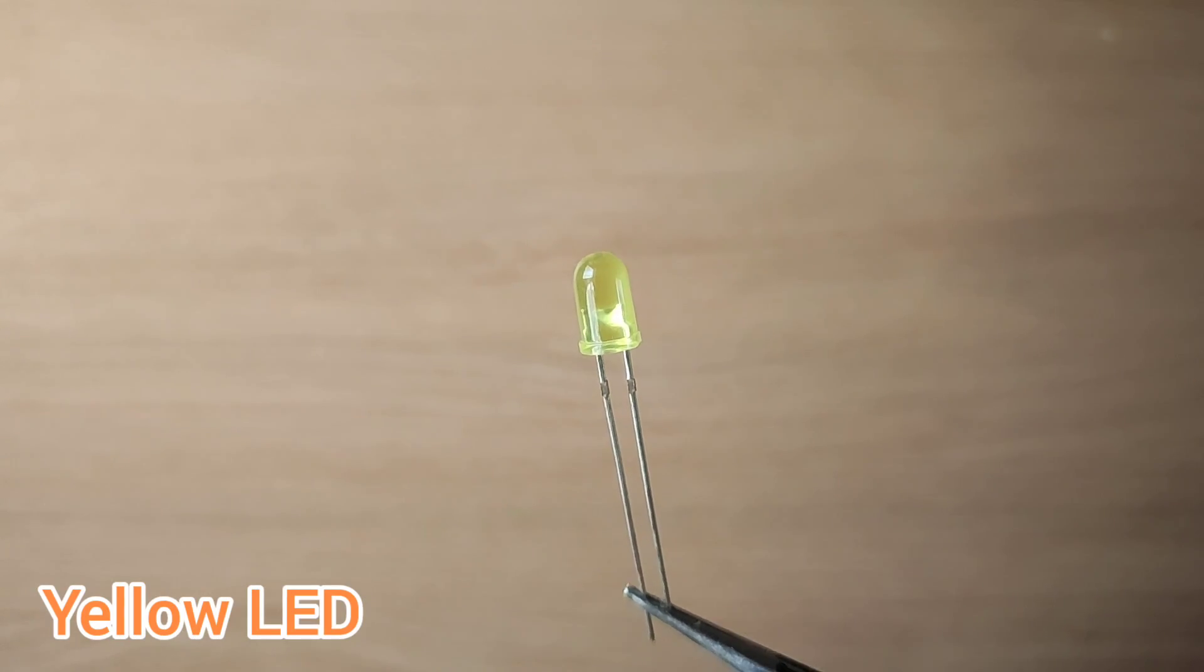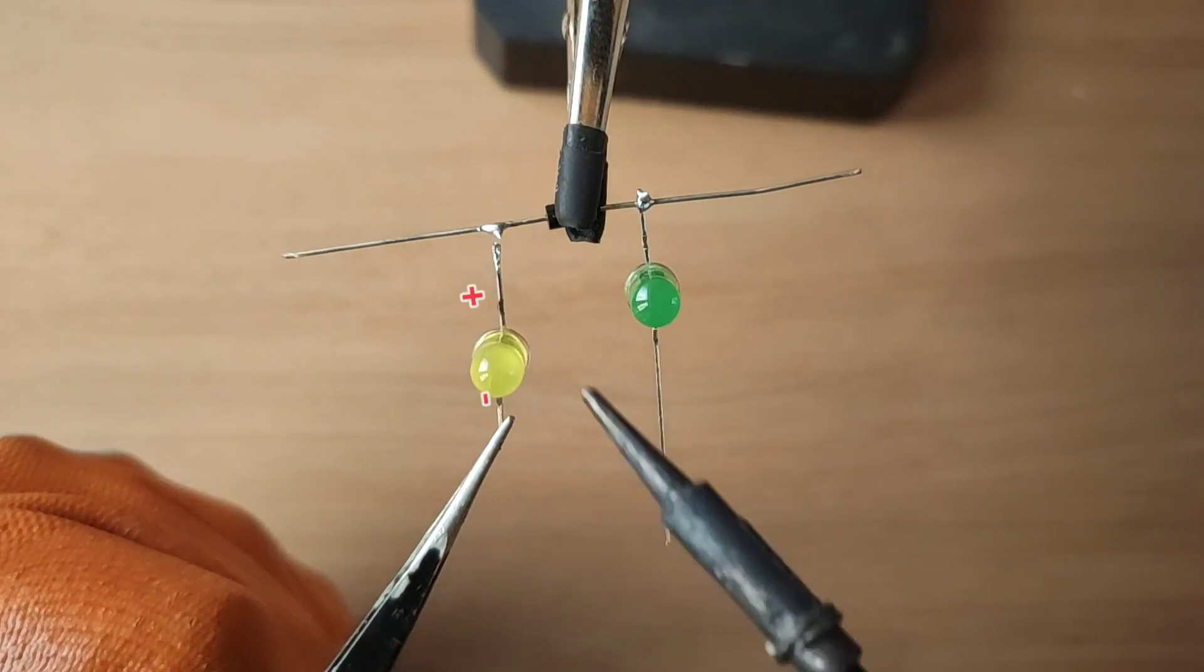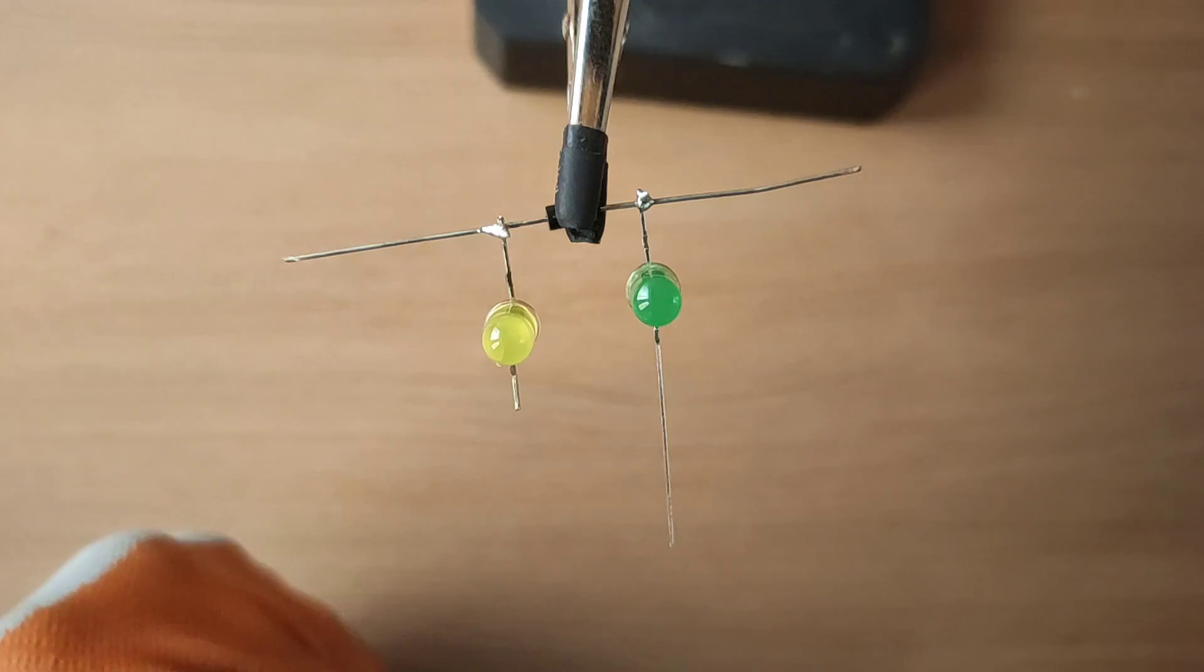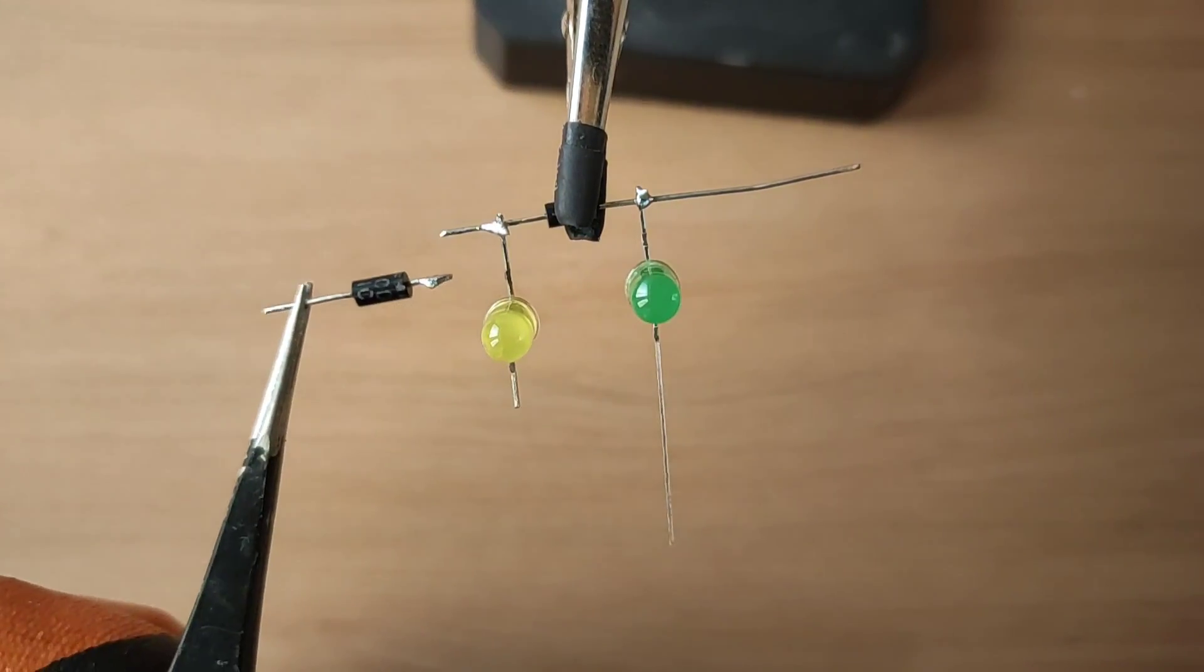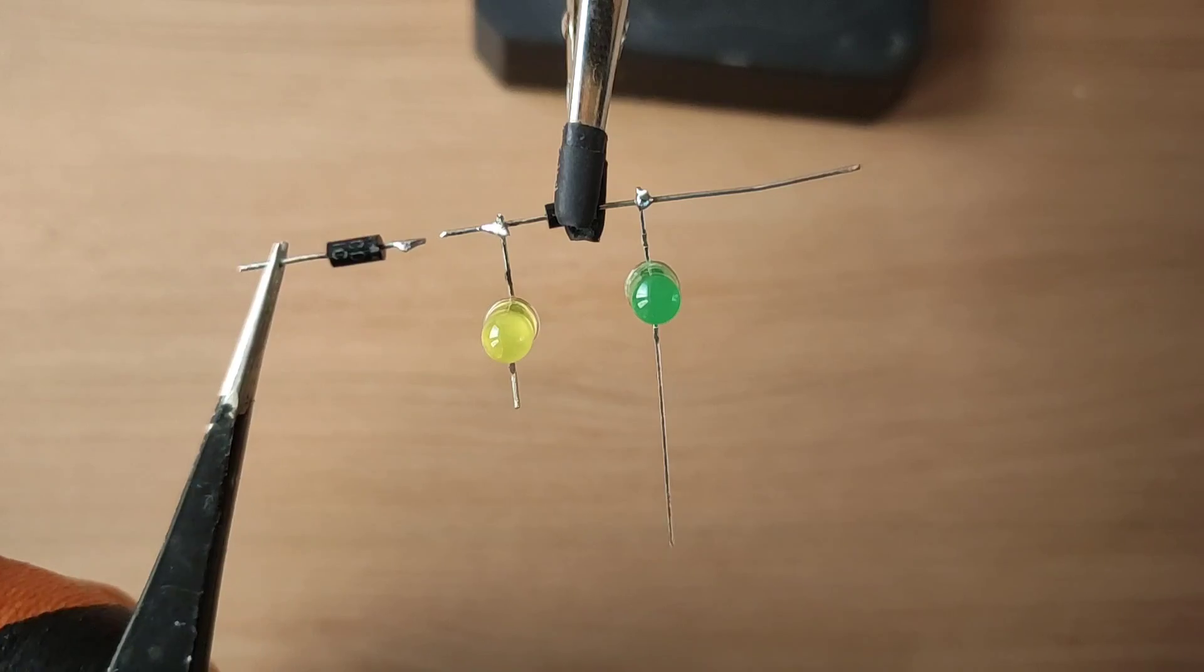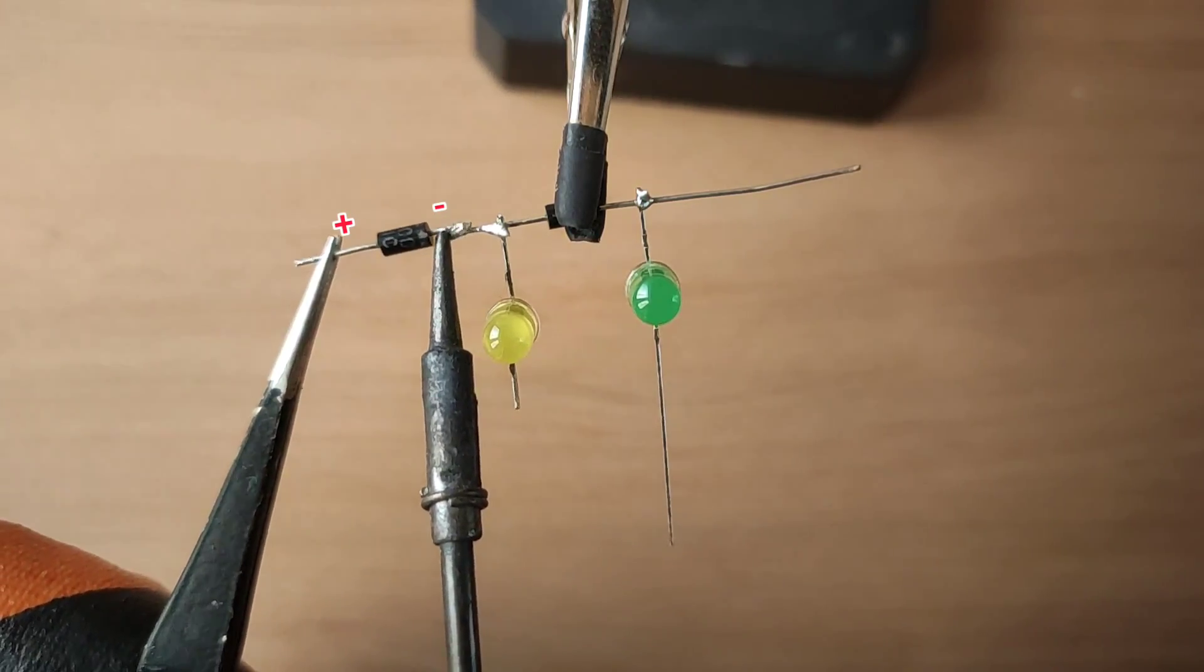Take yellow LED. Solder the yellow LED positive with diode's anode side. Take another 1N4007 diode and solder diode's cathode to yellow LED positive.